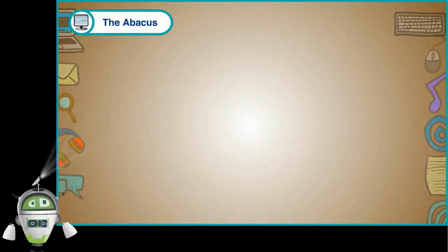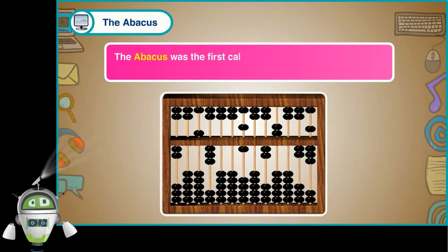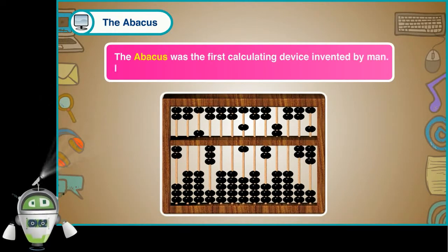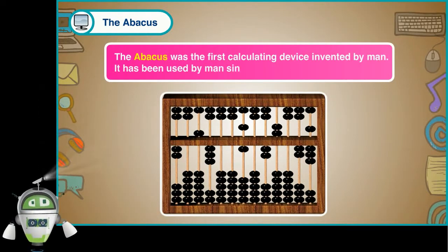The Abacus. The Abacus was the first calculating device invented by man. It has been used by man since ancient times.